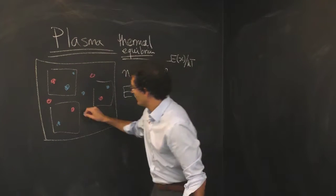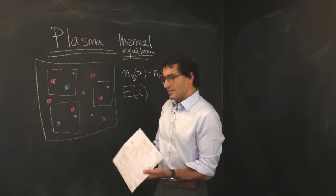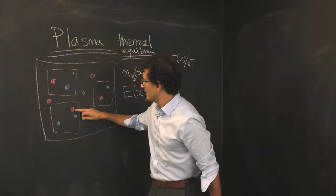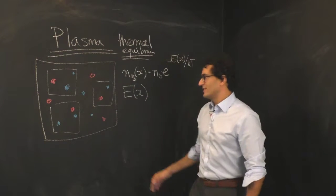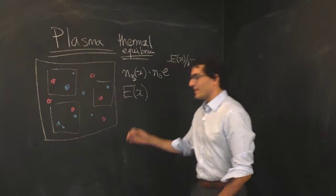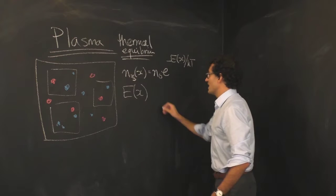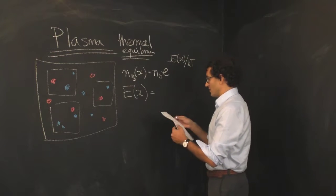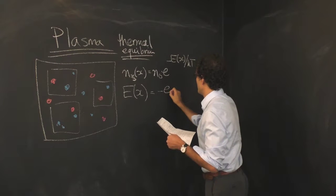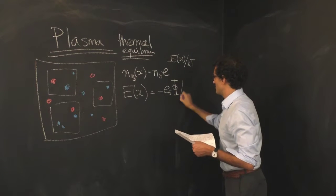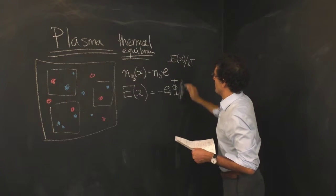It's going to want to be there, whereas if an electron is near another electron it doesn't like that as much. And so the energy of a particle at some point x is equal to negative the charge of that species times the electric potential. And then when we put that up there, we get that the density of each species is n₀ e to the negative...